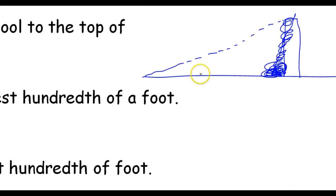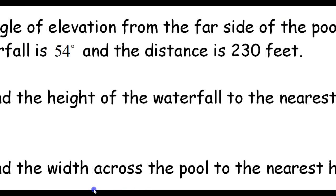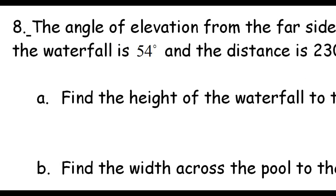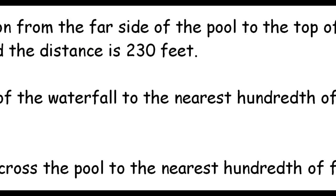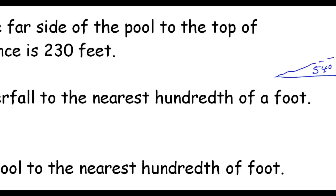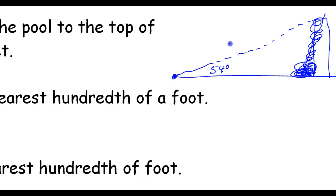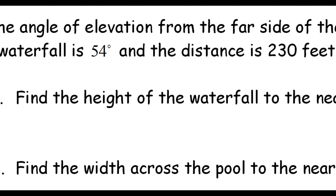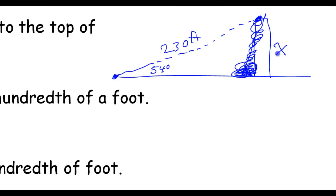The angle of elevation is 54 degrees, marked right here in the picture. The distance is 230 feet. So the angle of elevation from the far side of the pool to the top of the waterfall — I think this distance needs to be on the hypotenuse because it's from the far side of the pool straight to the top of the waterfall. So 230 feet is on the hypotenuse, and we are supposed to find the height of the waterfall.